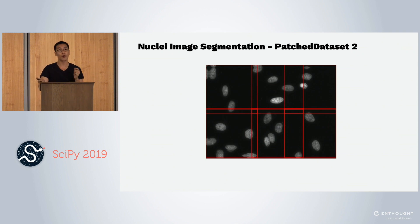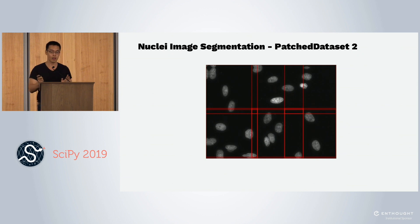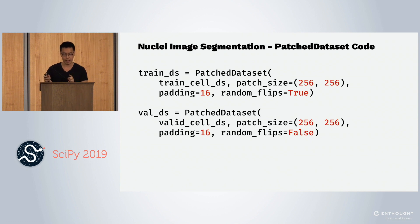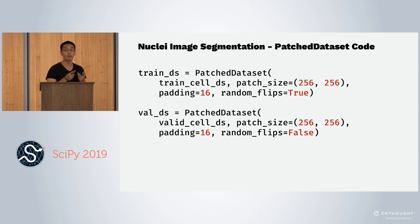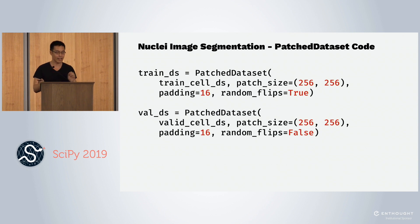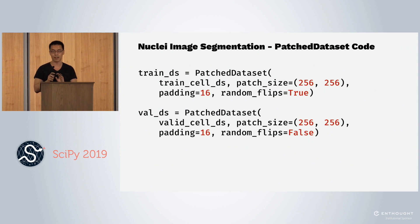Since my dataset API only outputs tuples of the raw image, it's good to create another object just to do the patching, because it's very object-oriented. The base CellDS returns images raw; the patch version does the patching, padding, random flipping, and all the magic. Now your training and validation datasets are all pre-patched and ready.